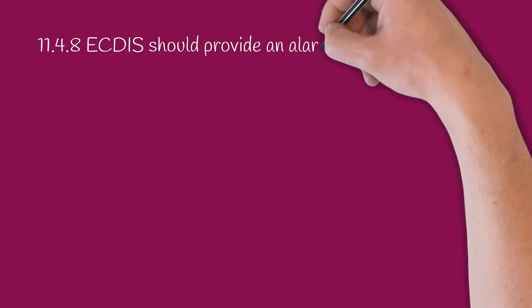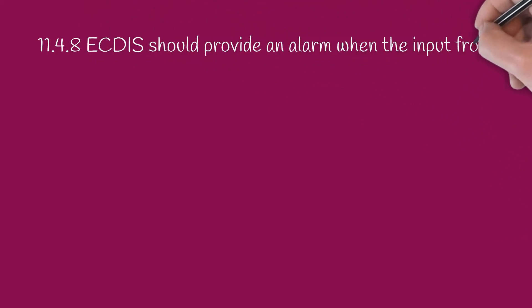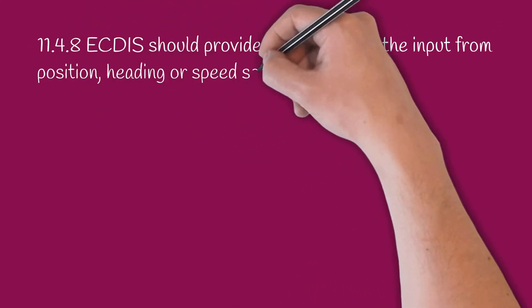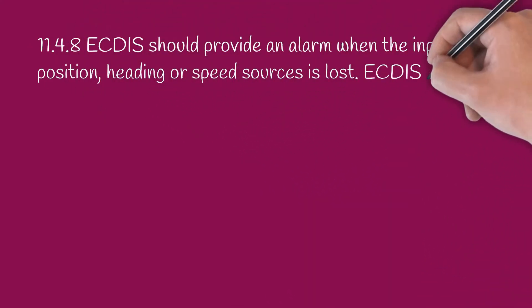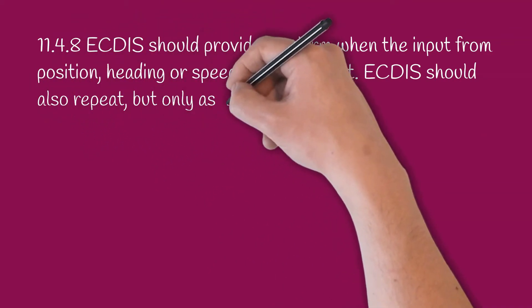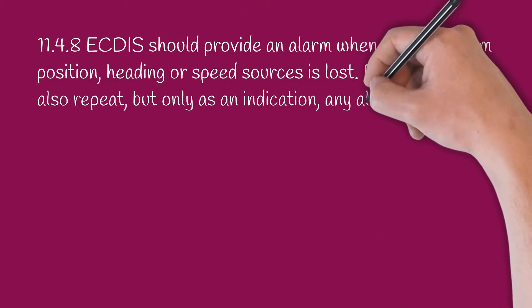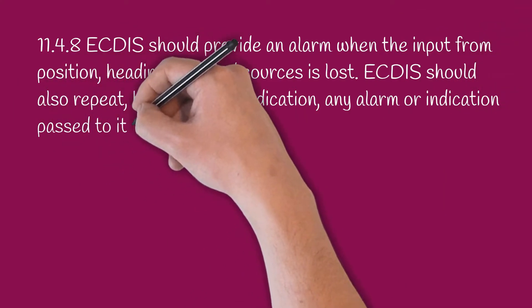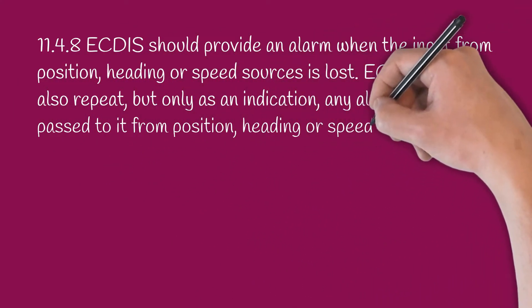11.4.8. ECDIS should provide an alarm when the input from position, heading, or speed sources is lost. ECDIS should also repeat, but only as an indication, any alarm or indication passed to it from position, heading, or speed sources.